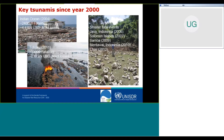Tsunamis are not very frequent — there are approximately five to ten events globally each year. Since the year 2000, the most important events are the Indian Ocean tsunami in 2004 and the Tohoku tsunami in 2011. The Indian Ocean tsunami caused by far the highest number of fatalities, while the Tohoku tsunami had a much larger direct economic loss, and also the Fukushima event as a very important cascading event. There have also been a number of other fatal events in Java, Mentawai, Indonesia, the Solomon Islands, Samoa, and Chile.